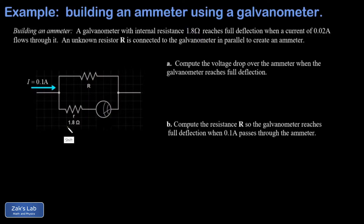It has an internal resistance of 1.8 ohms. Physically that's the resistance of the coil of wire inside the galvanometer, but we model it as a resistanceless galvanometer in series with an internal resistance. We're told that when 0.02 amps flows through this galvanometer it reaches full deflection on the scale.